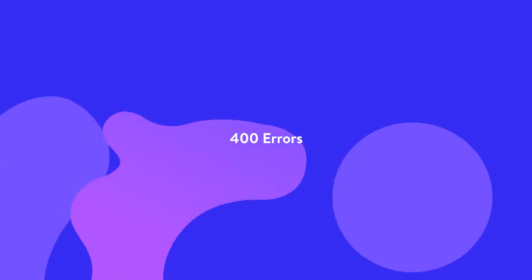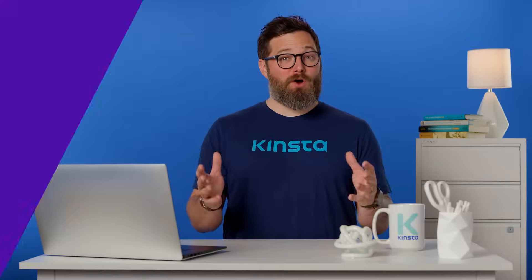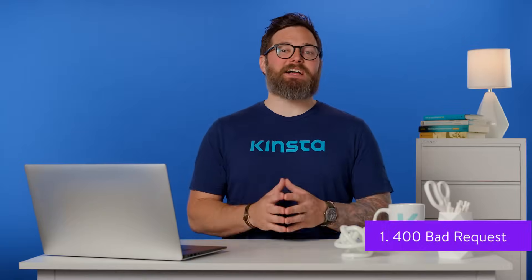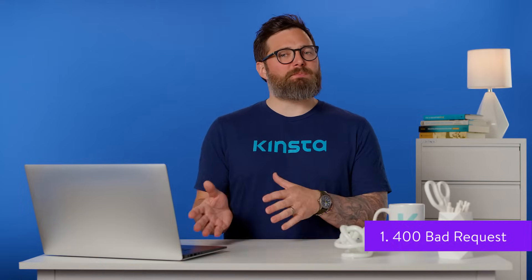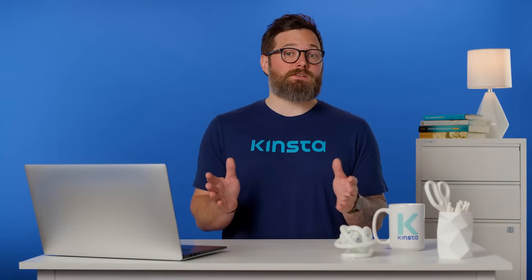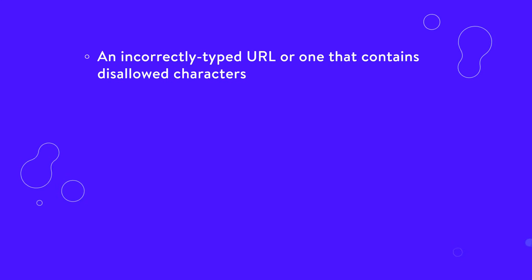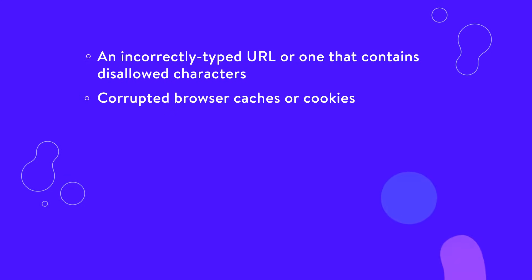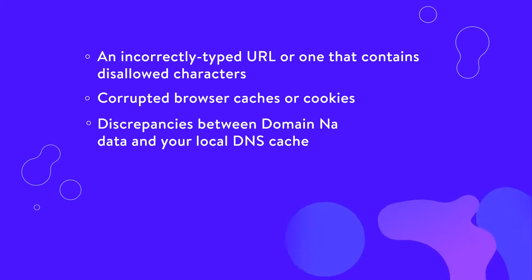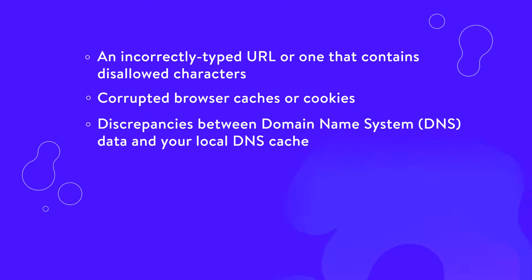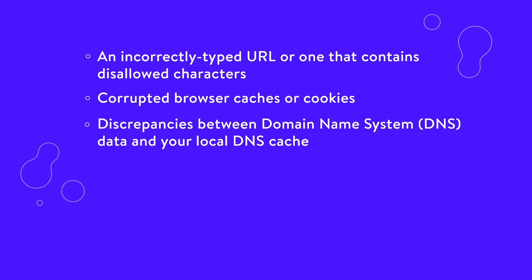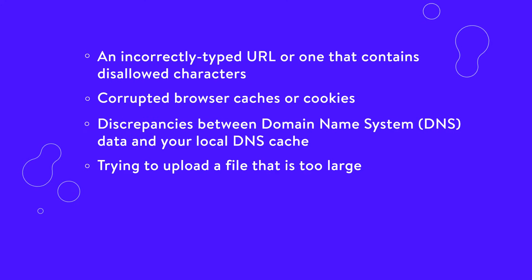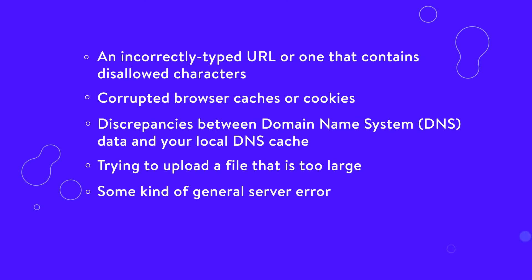The 400 bad request response is a catch-all for when your server experiences a client error but it doesn't fall into a specific category. That means this error has several possible causes, including an incorrectly typed URL or one that contains disallowed characters, corrupted browser caches or cookies, discrepancies between DNS data and your local DNS cache, trying to upload a file that is too large, or some kind of general server error.